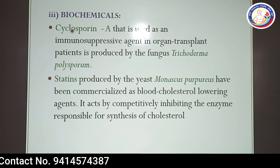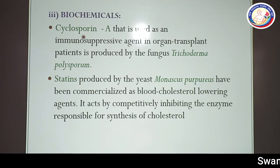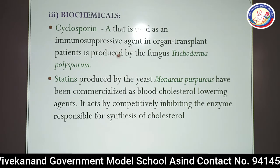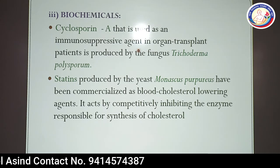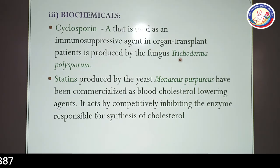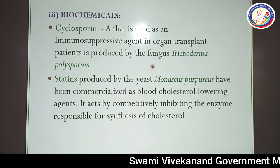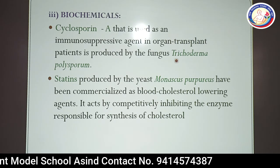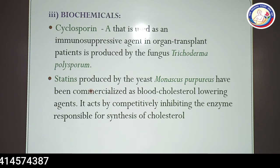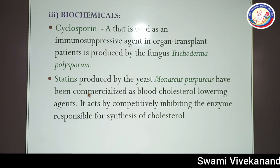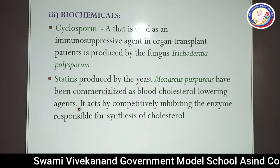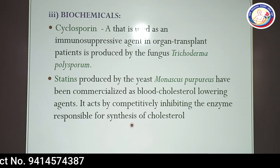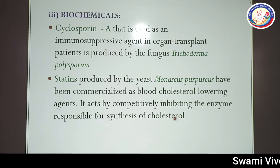The third category is bioactive chemicals. Cyclosporine A is used as an immunosuppressive agent in organ transplant patients and is produced by the fungus Trichoderma polysporum. Statins, produced by yeast Monascus purpureus, have been commercialized as blood cholesterol-lowering agents. They act by competitively inhibiting the enzyme responsible for synthesis of cholesterol, and are prescribed to patients with high cholesterol levels.